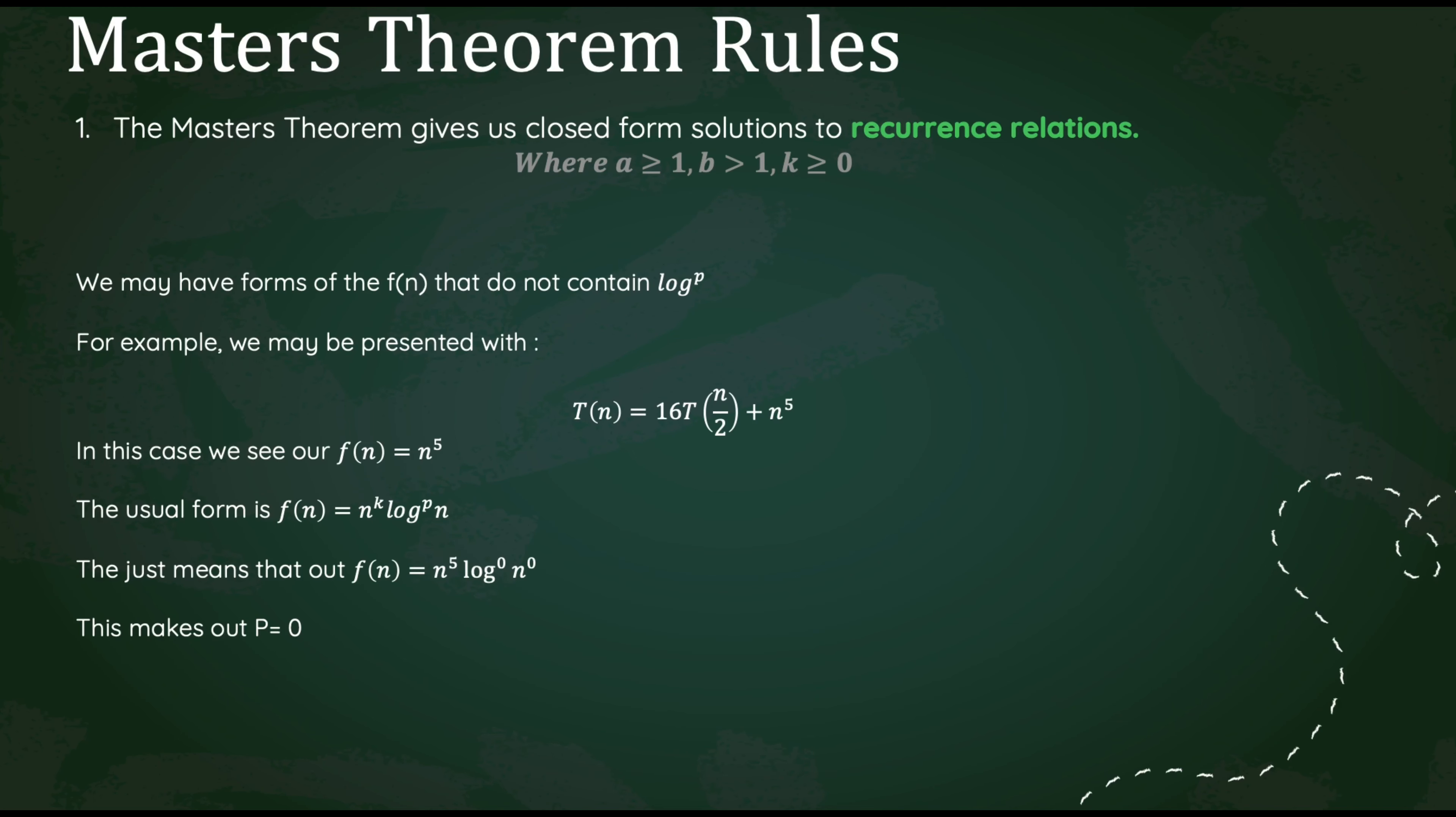We may have forms of f(n) that do not contain our log raised to the p. For example, we may be presented with T(n) equals 16T(n/2) plus n to the 5th. We know that our f(n) would be equal to n to the 5th. However, this does not directly correspond with the format that we talked about earlier.